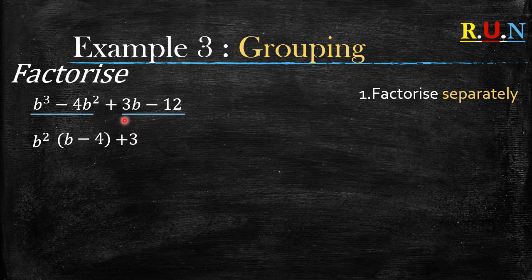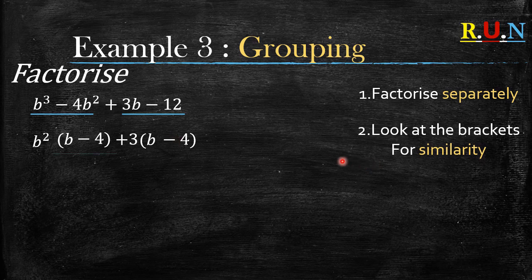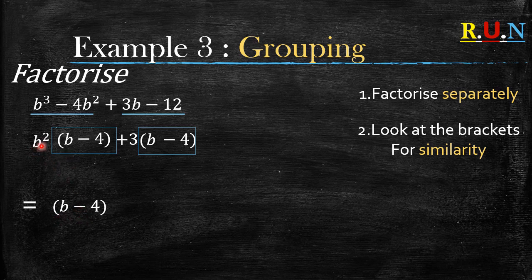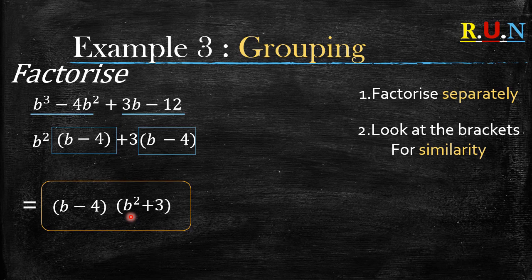Now factorize the second pair. The highest common factor of three and twelve is three. 3b divided by three gives b, and negative twelve divided by three gives negative four. Look at the brackets for similarity — is it (b minus 4) on both sides? Yes. So we write (b minus 4) as the repeated bracket and (b² + 3) as the other factor. That's our final answer.